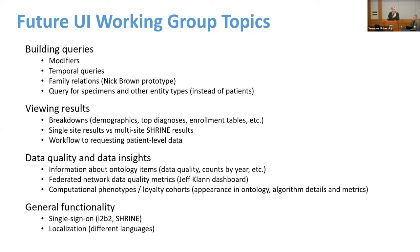In previous symposiums there has been talk about general functionality, like single sign-on between I2B2 and Shrine, and localization using different languages, among additional topics. We don't have a separate session here on the Committee on Technology, but it's another working group that I lead where we talk about ontology, ETL, AI, and user interface — topics that cross all these different working groups. Computational phenotypes, modifiers, and ontology are things that in an individual working group you can't solve on their own; sometimes you need different components of I2B2 to work together.